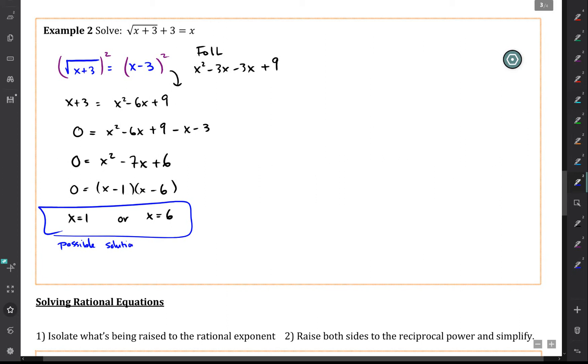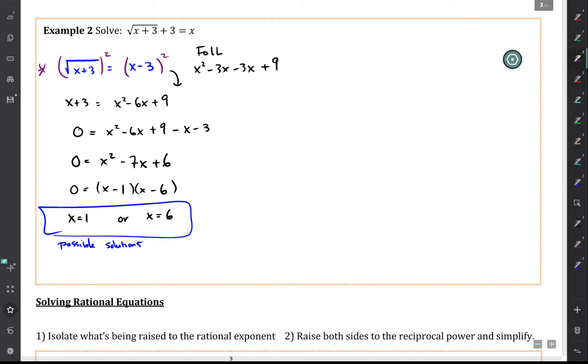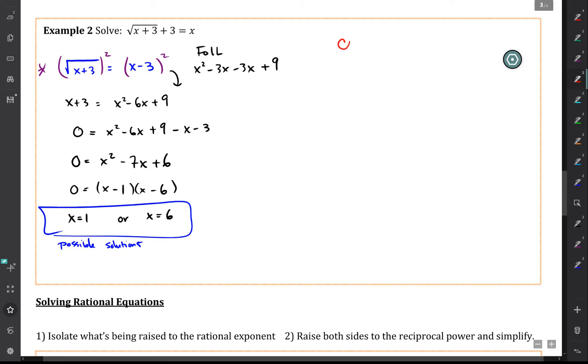And the reason why I say possible solutions is that when we squared both sides up here in step 2, so all the way back here when we squared both sides of the equation, we might have introduced some extraneous solutions. So step 4 is to check for extraneous solutions. Those are extra solutions that actually don't satisfy the equation.